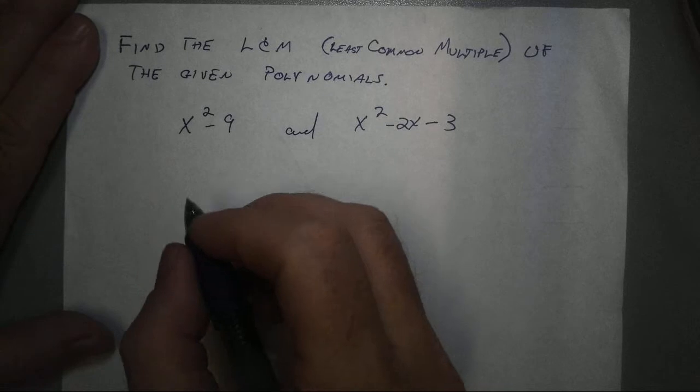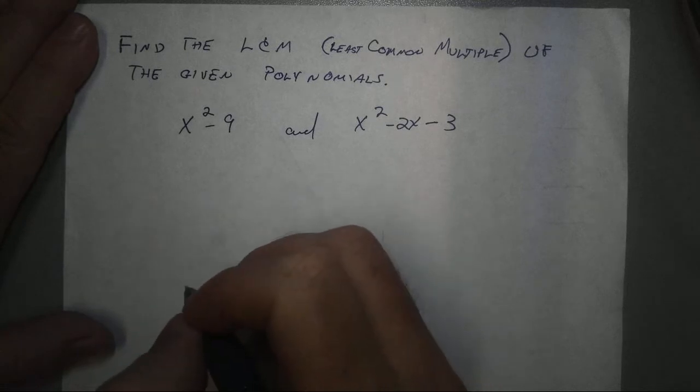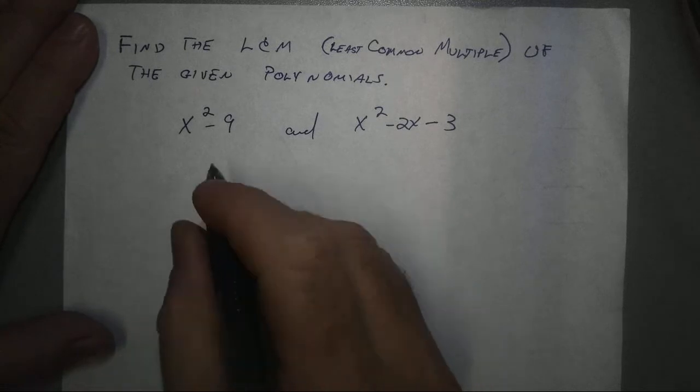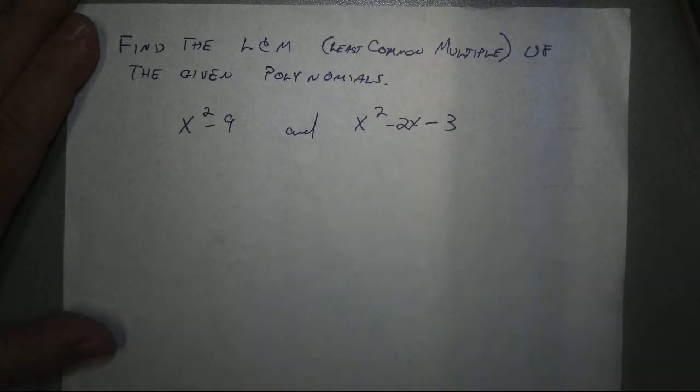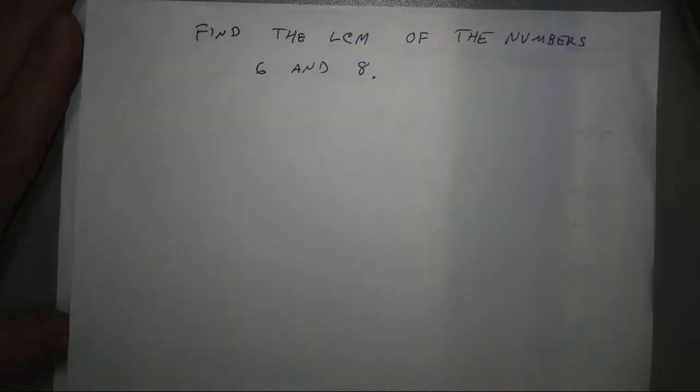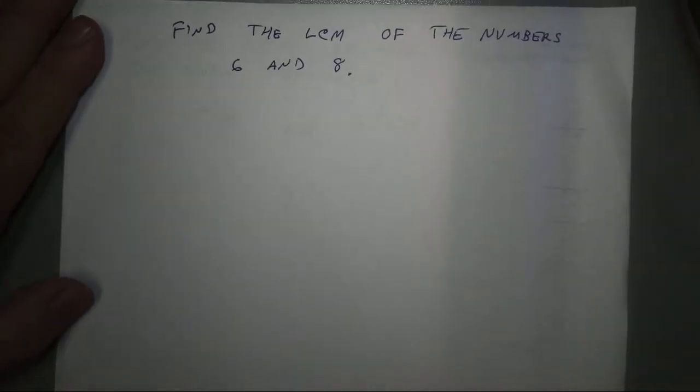Find the least common multiple of the given polynomials: x squared minus 9, and x squared minus 2x minus 3. Before we solve this one, I want to try to take a quick look at a related problem using numbers.